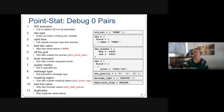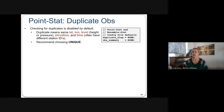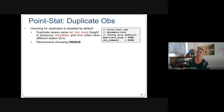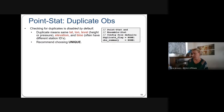You can turn on duplicate rejection with the duplicate flag option. Duplicates are defined by the same latitude, longitude, level, elevation, and time. Using the option 'Unique' ensures you only get one observation within a particular time window.